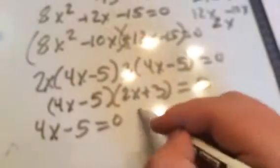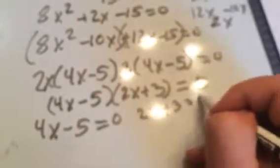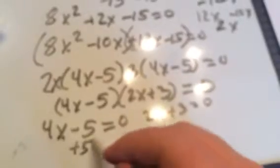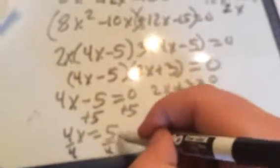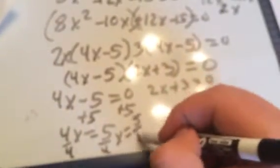They both equal 0. Set them both separate equal to 0. Zero product rule. 2x plus 3 equals 0. We're going to add 5 to both sides. 4x equals 5. Divide 4 both sides. x equals 5 over 4.